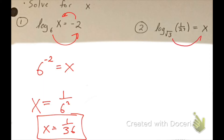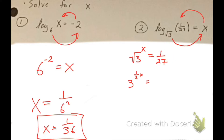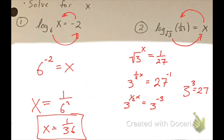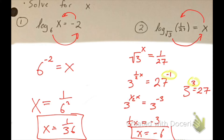Our second question: I rewrite and get root 3 raised to the power of x is equal to 1 over 27. I rewrite the radical as 3 raised to the 1/2, x is equal to 27 raised to the negative 1, which gives me 3 to the 1/2 x is equal to 3 to the negative 3 — because 3 cubed equals 27 and multiplied by negative 1 gives negative 3. Since my bases are equal, my exponents must be equal, so 1/2 x equals negative 3, therefore x equals negative 6.